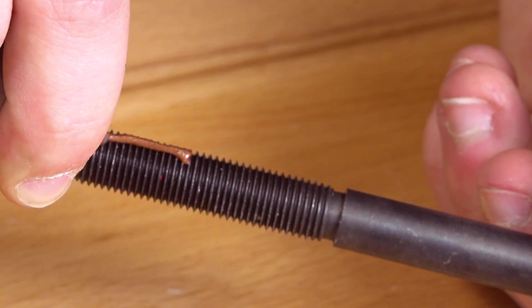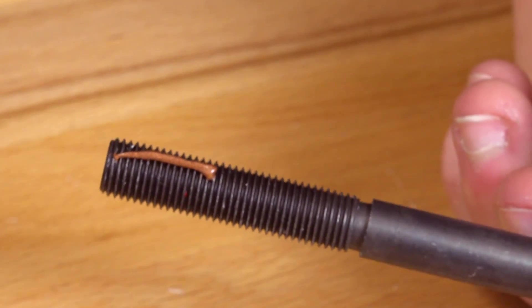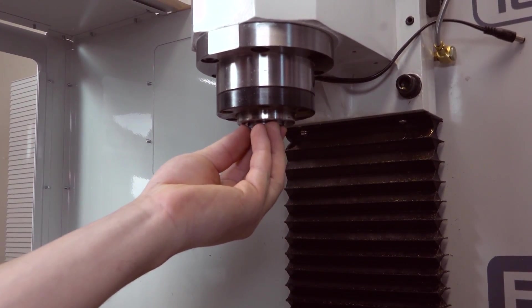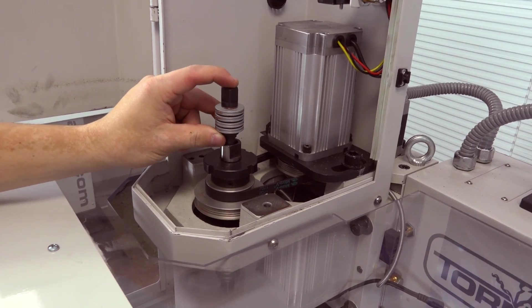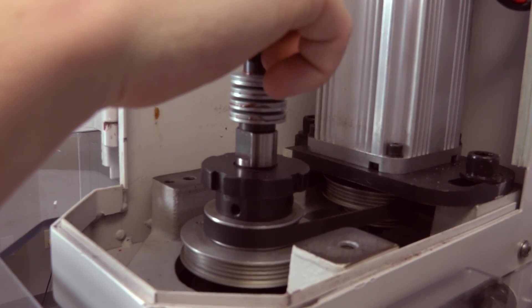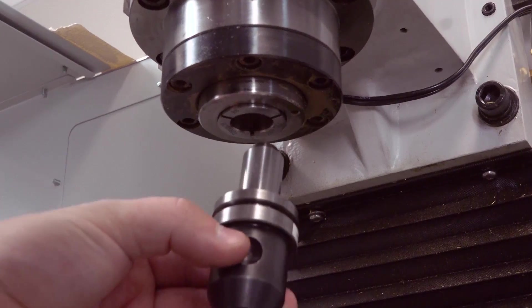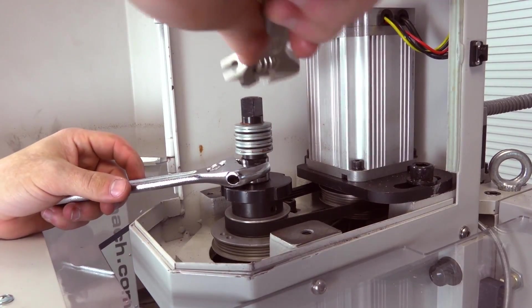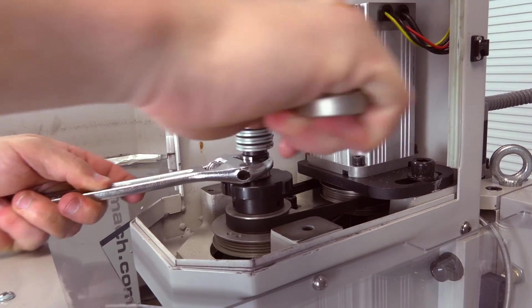Then apply the anti-seize to the bottom threads of the drawbar. Insert a TTS collet into the mill's spindle with one hand and thread in the drawbar with the other. Hand tighten the drawbar. Insert the empty TTS tool holder into the collet and tighten the collet into the drawbar using two adjustable wrenches.